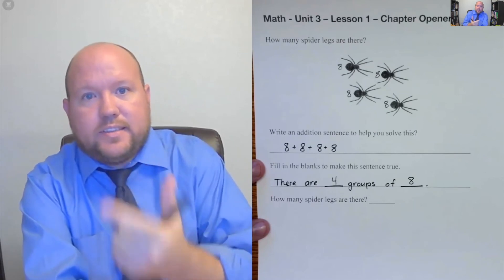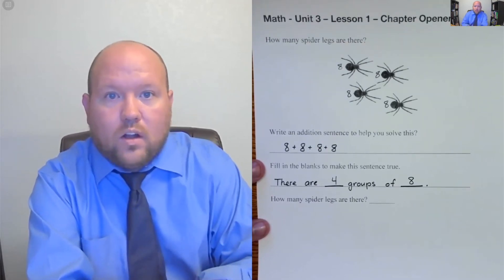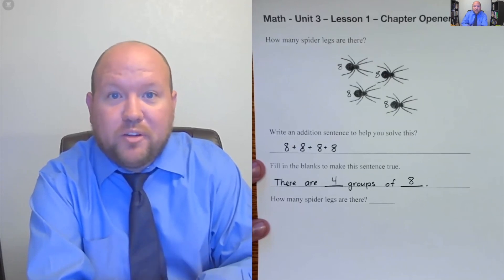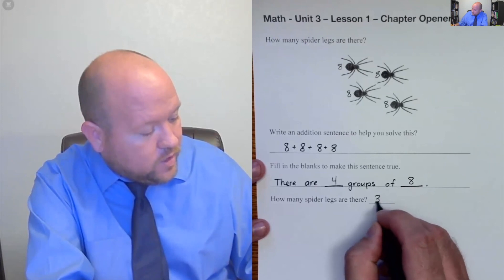Eight, 16, 24, 32. Or as we start to get into it, we'll be able to use multiplication. We'll memorize that four times eight equals 32. But the answer right here is 32.